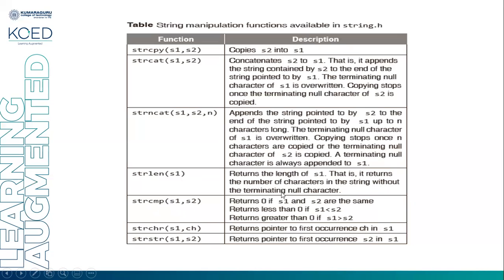strcmp compares strings S1 and S2: returns 0 if S1 and S2 are the same, returns a negative value when S1 is less than S2, and returns a positive value if S1 is greater than S2. strchr(S1, ch) searches for whether a character occurs in string S1, returning a pointer to the first occurrence of character ch in S1. strstr searches for the occurrence of string S2 in S1, returning a pointer to the first occurrence of S2 in S1. These are all the important string functions we will discuss one by one.